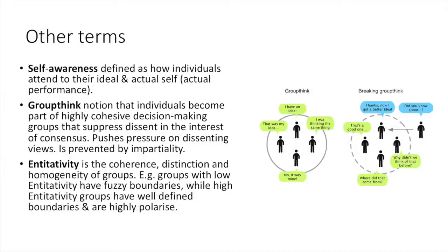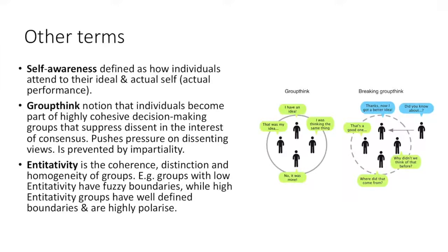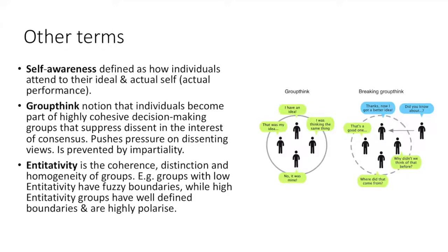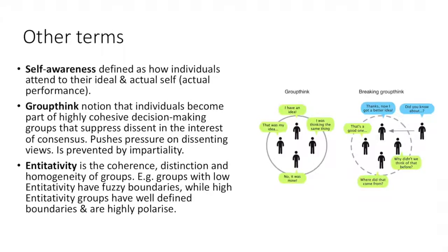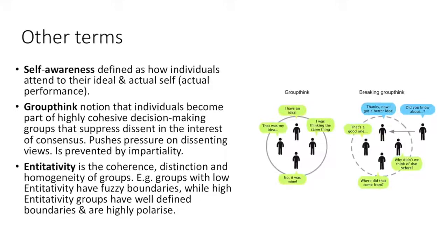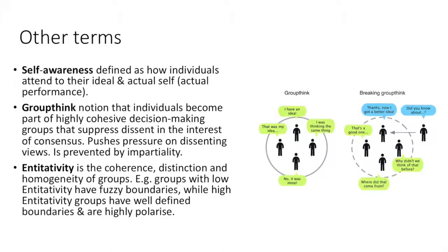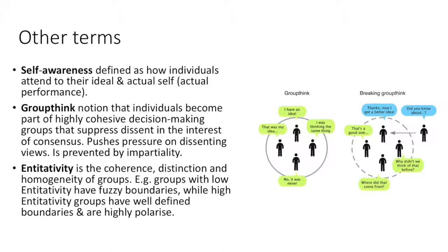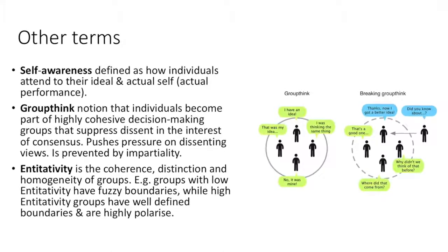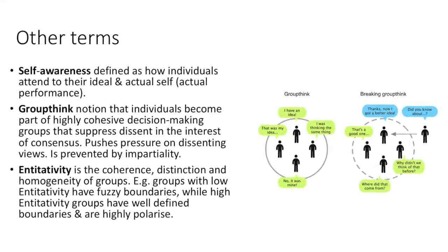Furthermore, we must consider self-awareness, which is defined as how individuals attend to their ideal and actual self or actual performance. Groupthink is the notion that individuals become part of highly cohesive decision-making groups that suppress dissent in the interest of consensus — agreeing with the popular view. This pushes pressure on dissenting views, and groupthink is prevented by impartiality.